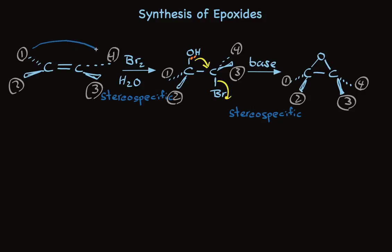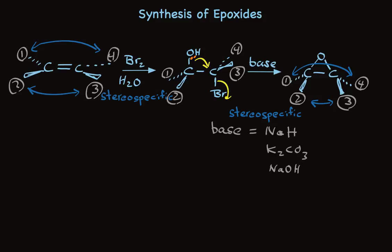When 1 and 4 start back, 1 and 4 end up back, which means 2 and 3 start in front and 2 and 3 end up in front. I've simply written base by the arrow for the second step — lots of bases have been used in this work, and I've written three examples here. Bottom line: alkenes are converted stereospecifically into epoxides. You can use a single-step process using peracid, or a two-step process using bromine and water followed by base. Both approaches give very good yields and are widely used.